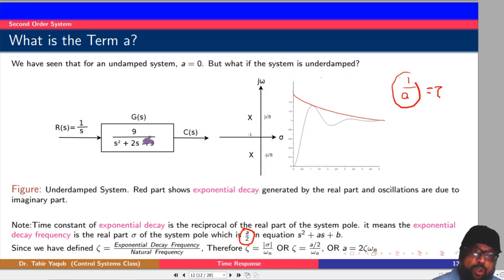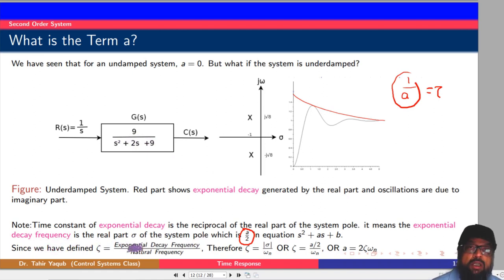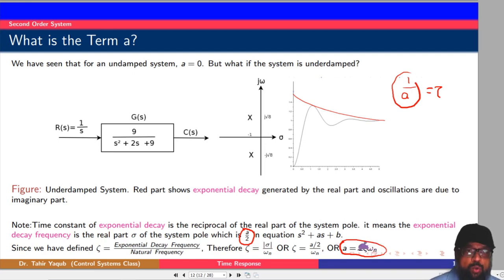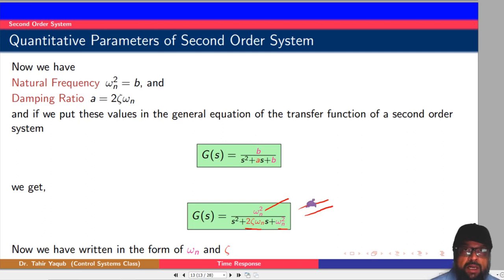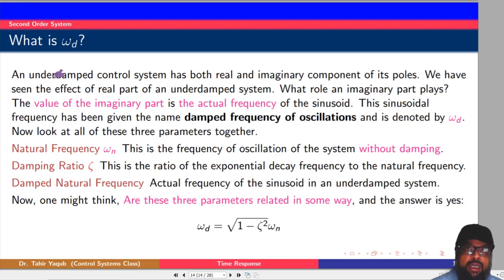Now substituting into the standard form b/(s² + as + b): replacing b with ωₙ² and a with 2ζωₙ, we get the more elaborate standard form of the second order system transfer function: ωₙ²/(s² + 2ζωₙs + ωₙ²). This is the detailed equation of the second order system, useful because an underdamped control system has oscillations, and these parameters characterize them.